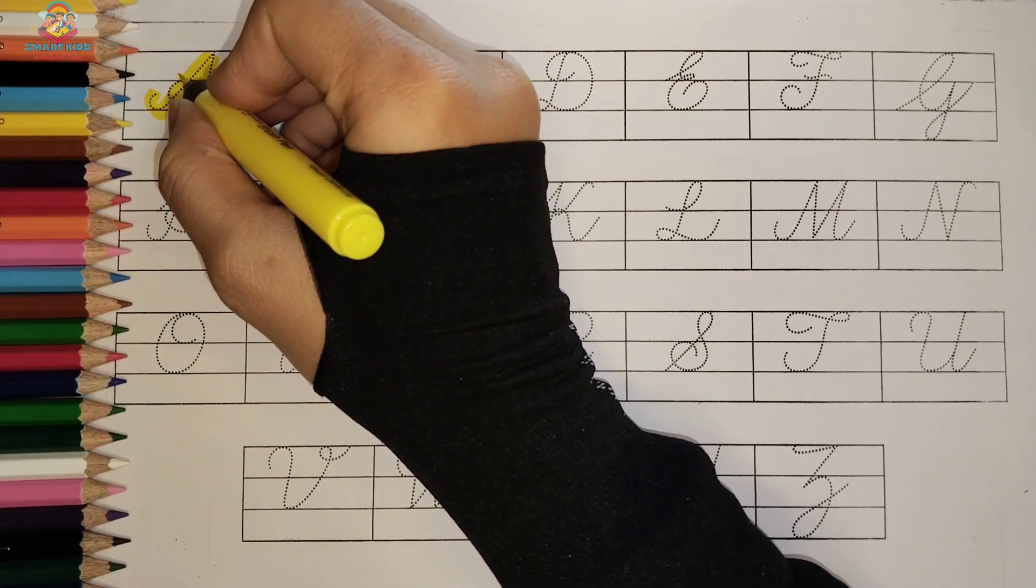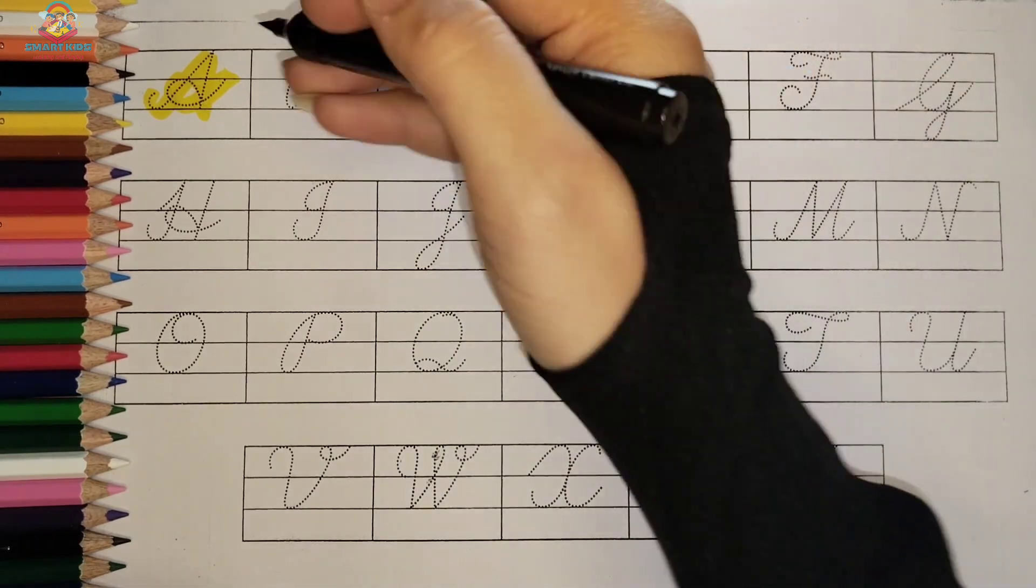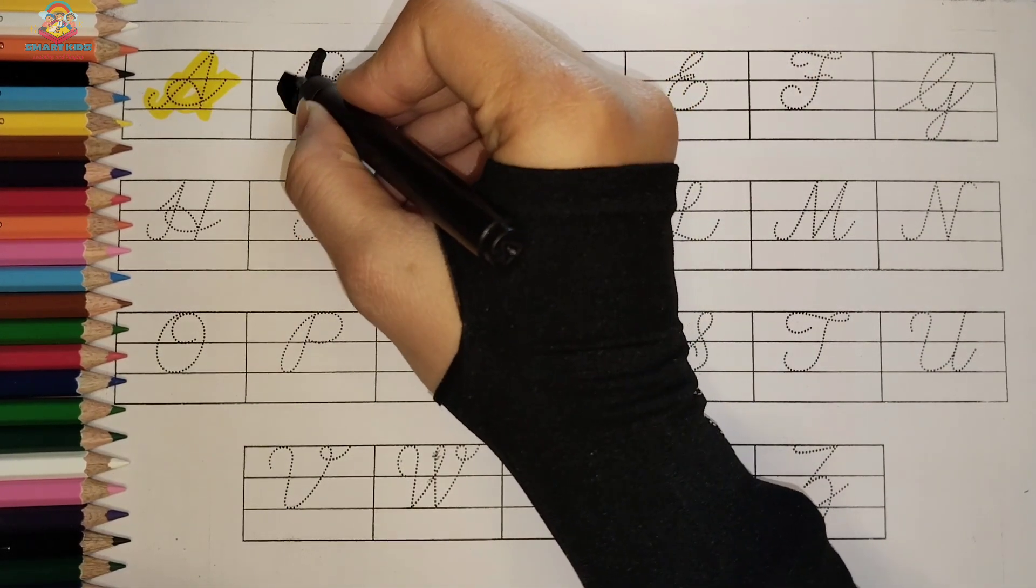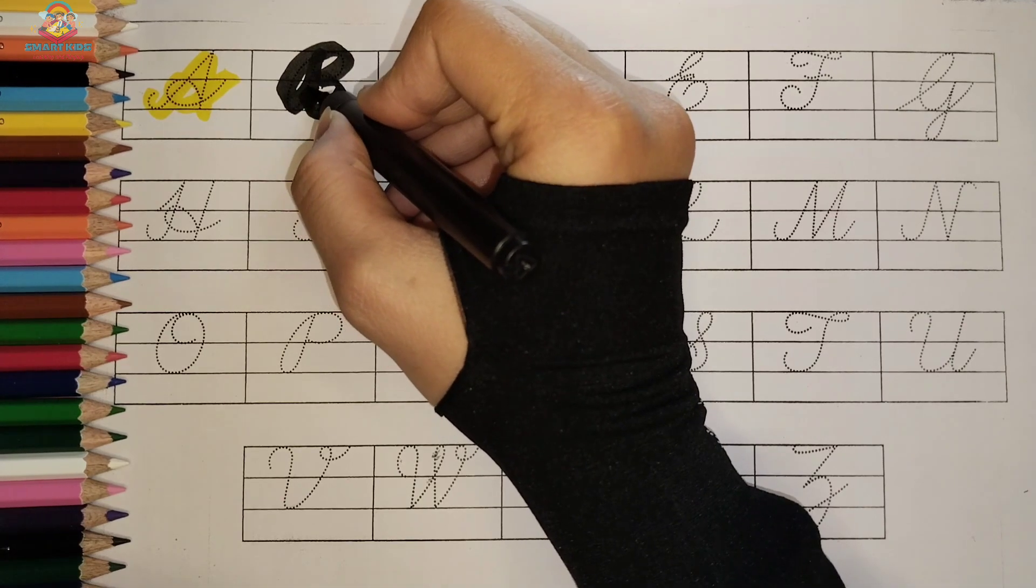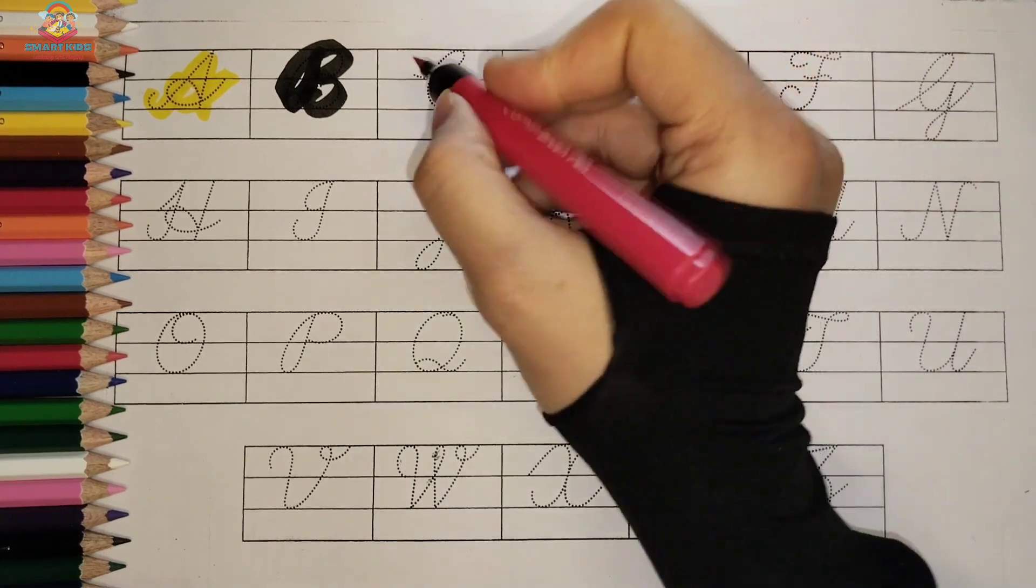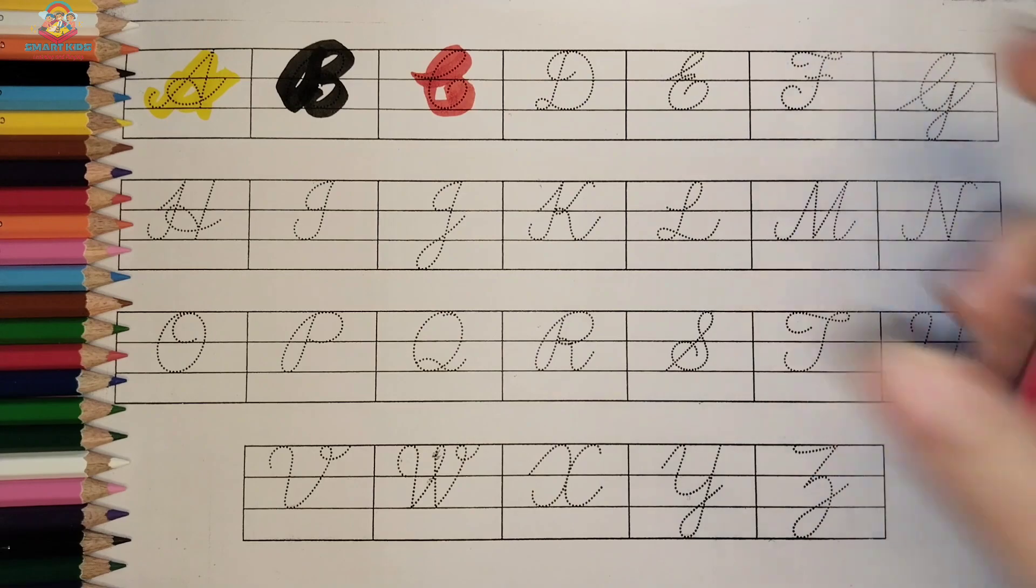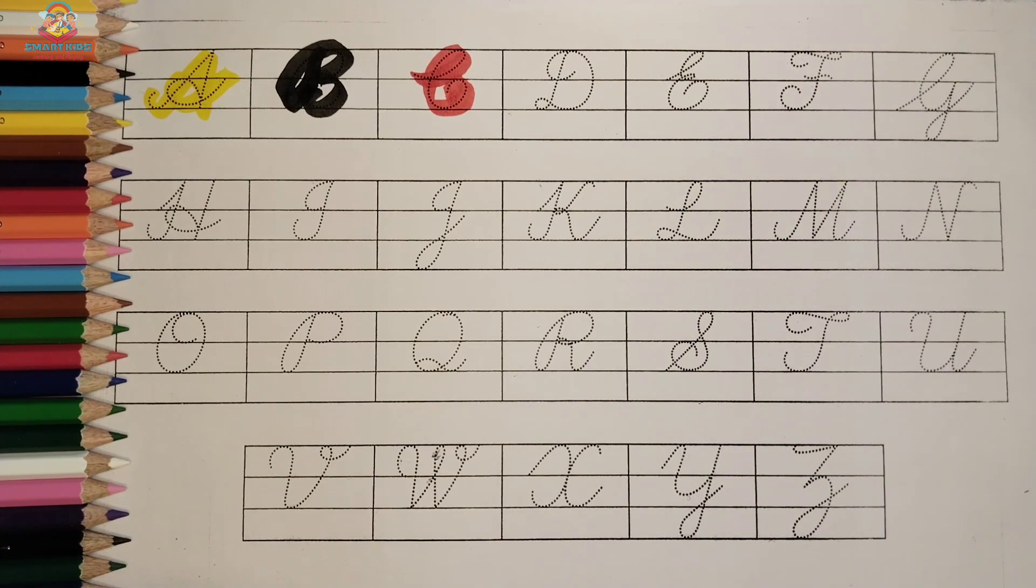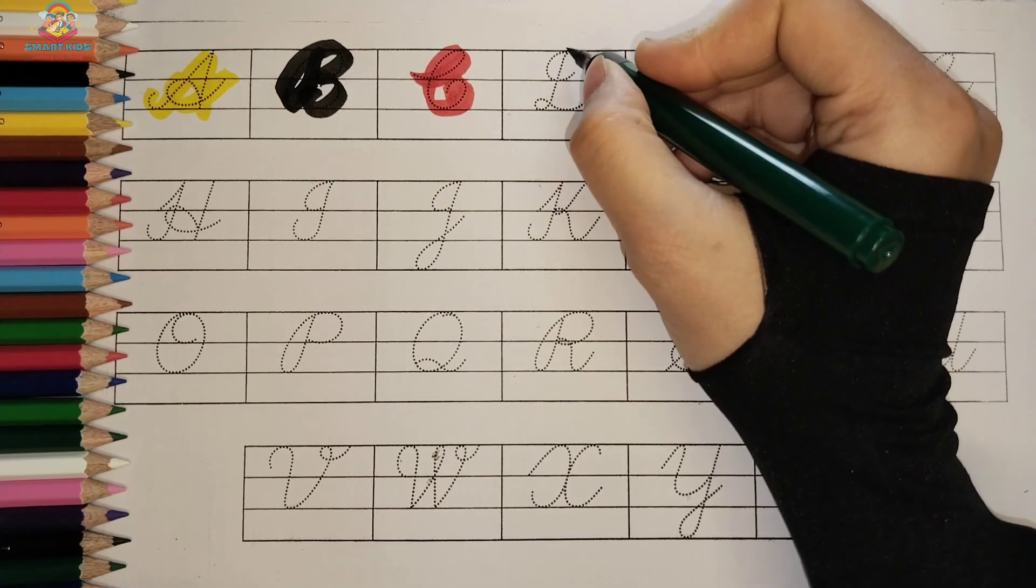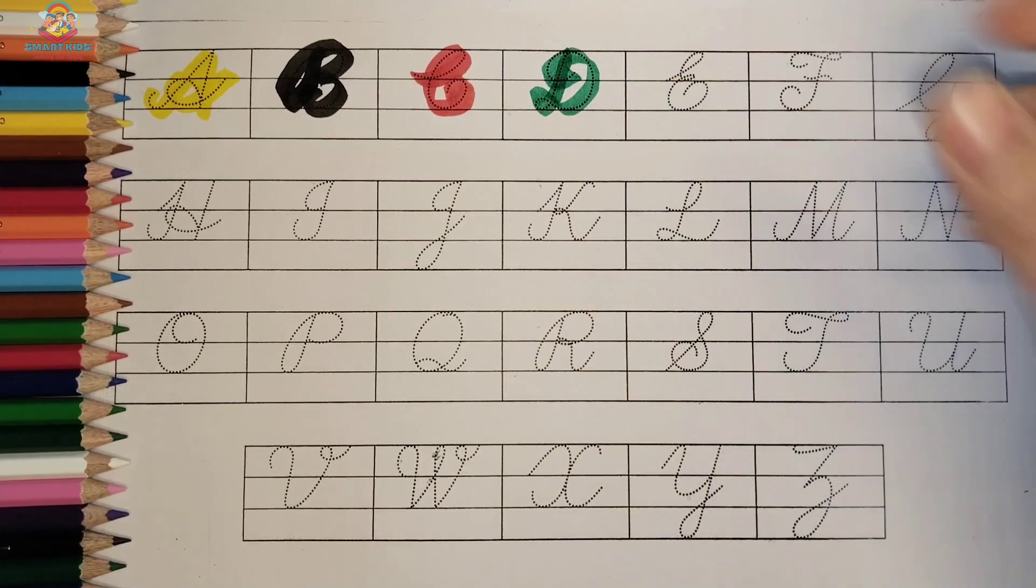A, A for Apple, A for Apple, Yellow Color. B, B for Ball, Black Color. C, C for Cat, C for Cat, Red Color. D, D for Dog, D for Dog, Green Color.